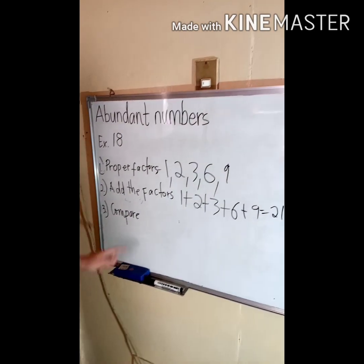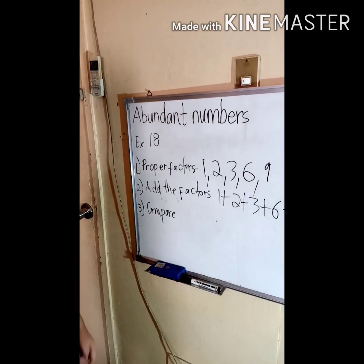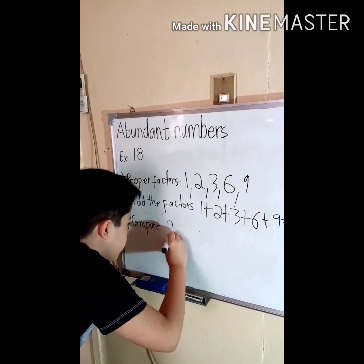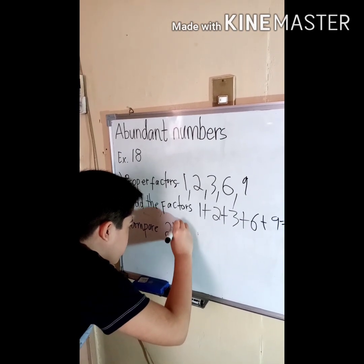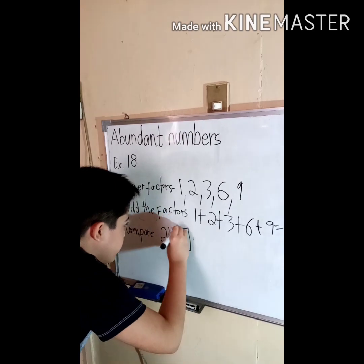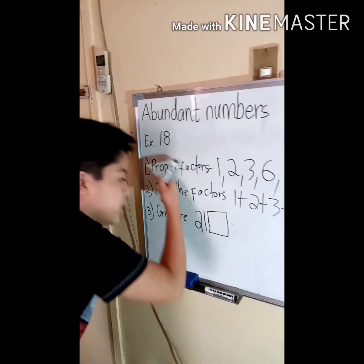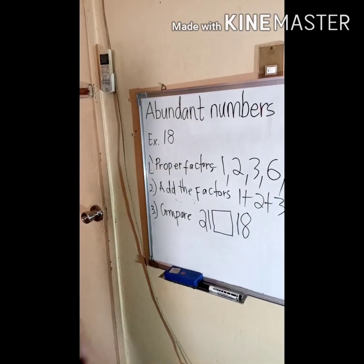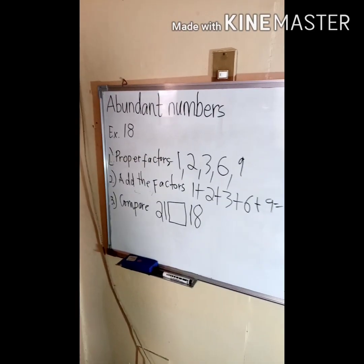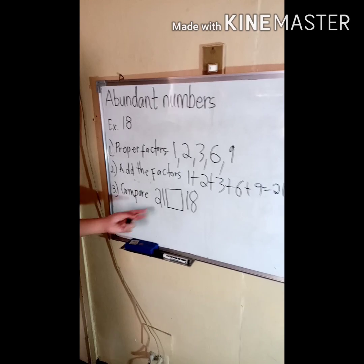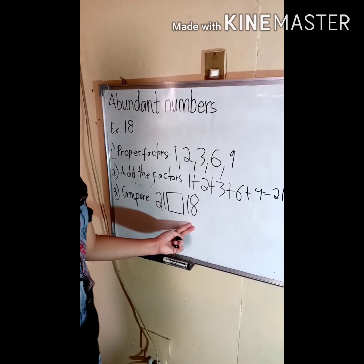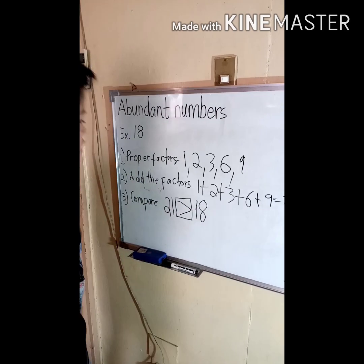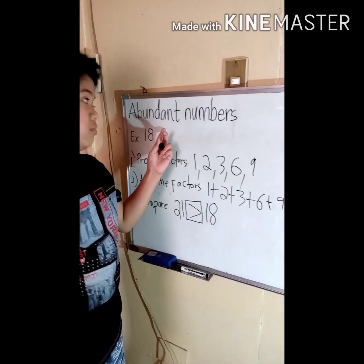Now we need to compare the sum of the proper factors, 21, with the given number, 18. Which is bigger — 21 or 18? Obviously it's 21, so we put the greater-than sign. So 18 is also an abundant number.